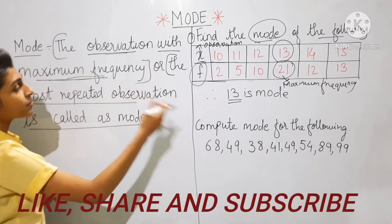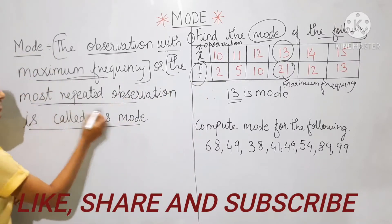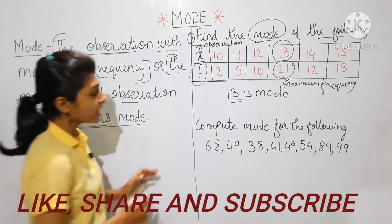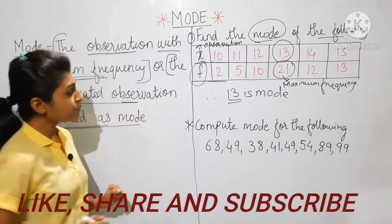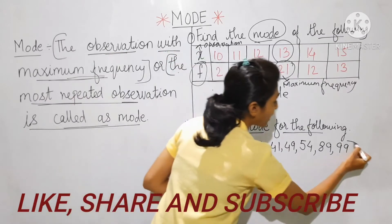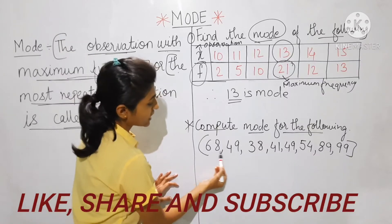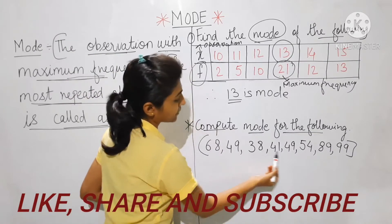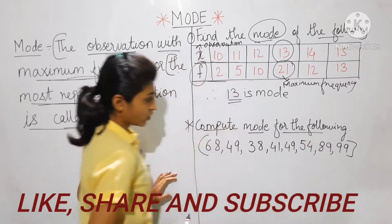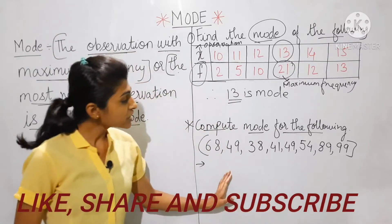Mode can also be called the most repeated observation. Now the next example: compute mode for the following data. This data is ungrouped individual observations: 68, 49, 38, 41, 49, 54, 89, and 99.